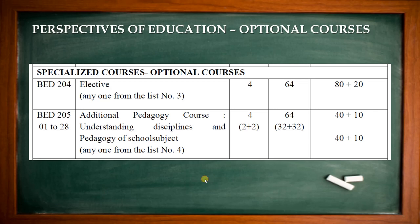There are 2 optional courses. Remember, optional doesn't mean you have the freedom to not select them — there are options in the specialization. BAD 204 is called elective, where a number of subjects are given and you will have to select any one. BAD 205 similarly has 28 subjects and you will have to select any one. So optional means you have freedom to select a particular subject from the given list, not freedom to skip it. The pattern is again 80-20.